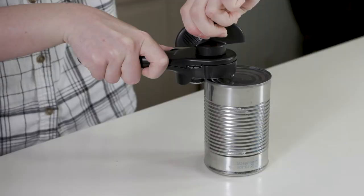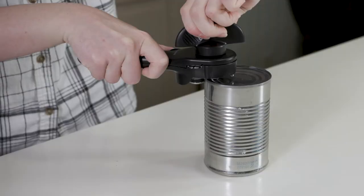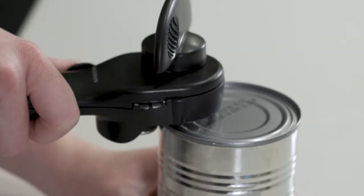Just align the can opener with the can and turn the knob clockwise to lock onto it. Twist the knob clockwise until the lid has been cut all the way around. Release the can opener by slightly turning the knob back.